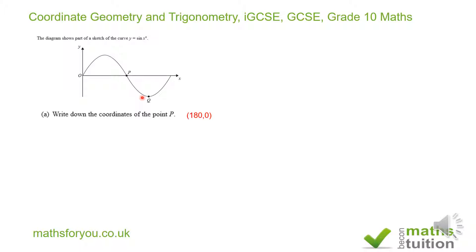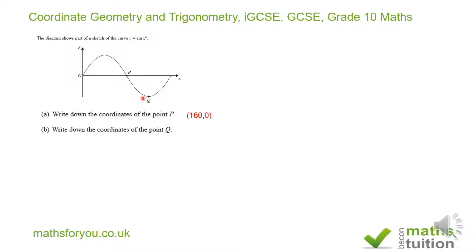Now we want to find the coordinate of point Q. From P we add another 90 degrees: 180 plus 90 is 270. Point Q is the minimum point, which is minus one. So Q is (270, -1).